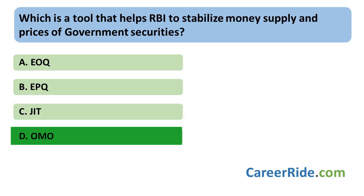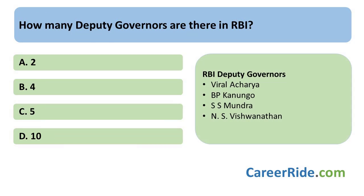EPQ stands for Economic Production Quantity and EOQ stands for Economic Order Quantity. The next question is: how many Deputy Governors are there in the RBI? RBI is India's Central Banking Institution, governed by a 21-member Central Board of Directors Committee. It consists of the Governor and 4 Deputy Governors: BP Kanungo, SS Munrla, NS Viswanathan, and Viral Acharya. The Central Board also contains 2 Finance Ministry representatives, 10 Government Nominated Directors, and 4 Directors representing the local boards at Mumbai, Chennai, Delhi, and Kolkata.